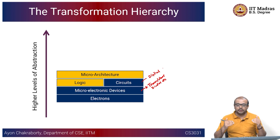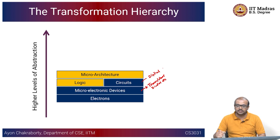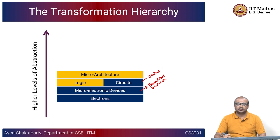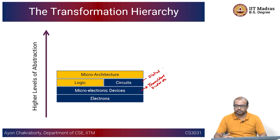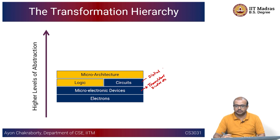On top of that, you have what is called a microarchitecture. Once you know what the various logical building blocks of your system are, how can you integrate multiple such logical blocks to create something more generic? Microarchitecture refers to the architecture of a computing system that is going to execute a basic set of tasks — it could be addition, multiplication, logical operations, or bit operations — and that constitutes the microarchitecture of the computing system.